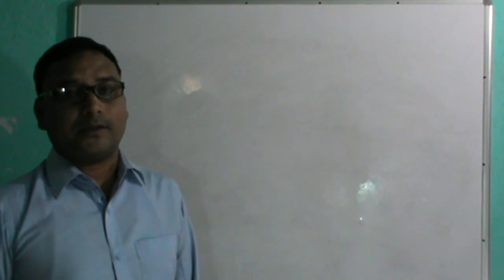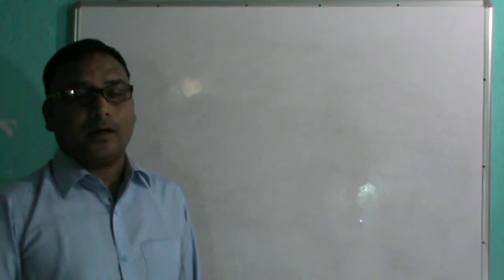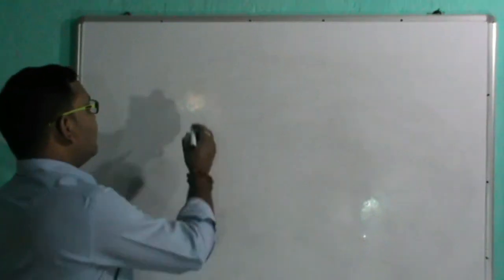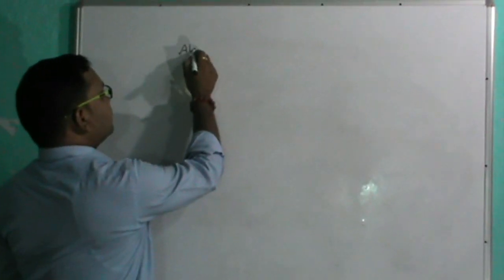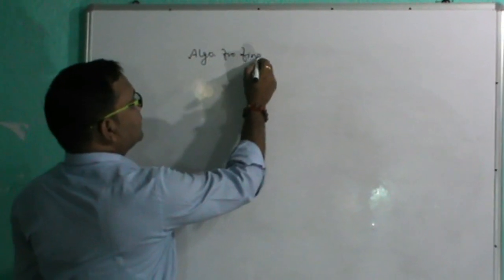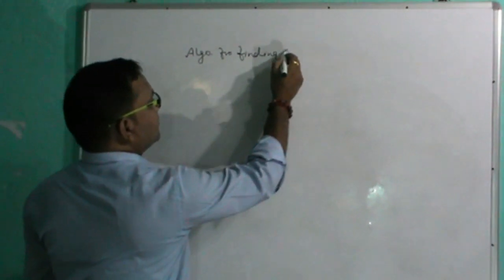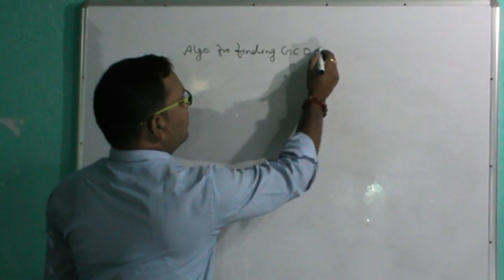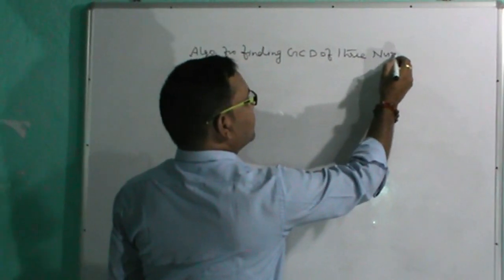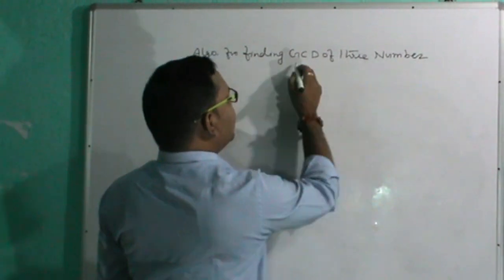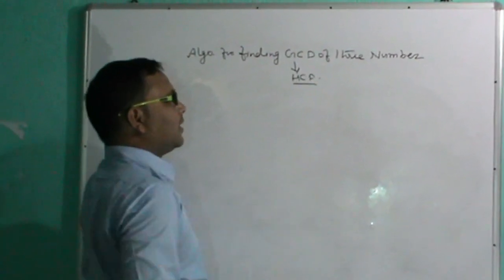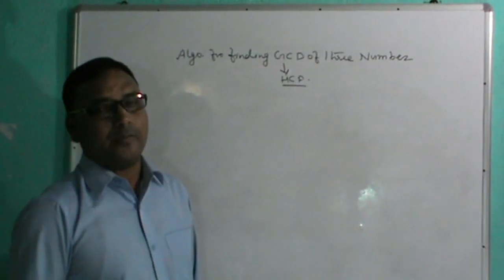Today's topic is how to find the GCD of 3 numbers. We want to design an algorithm for finding GCD of 3 numbers. GCD and HCF are both the same — highest common factor and greatest common divisor have the same meaning.